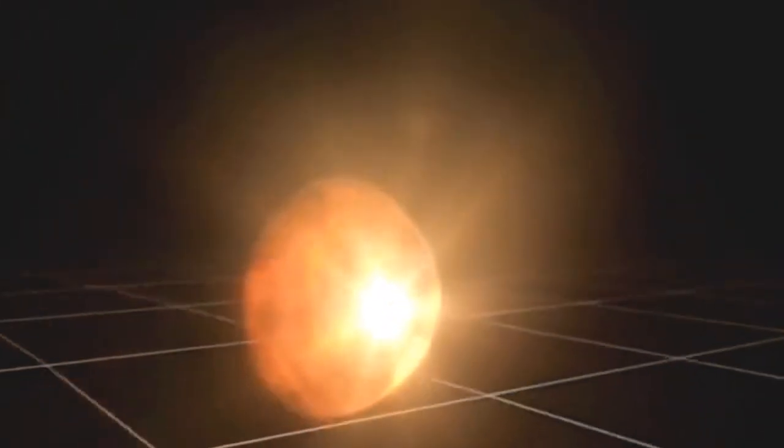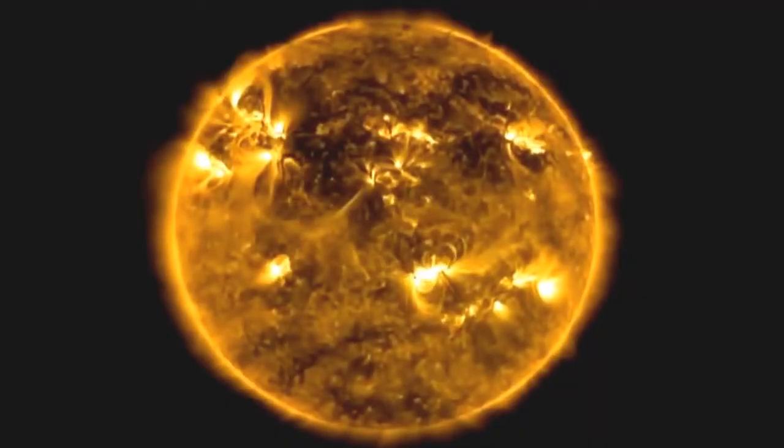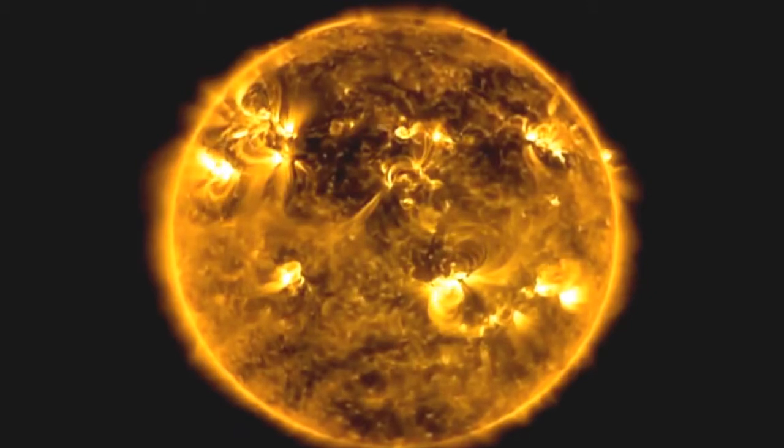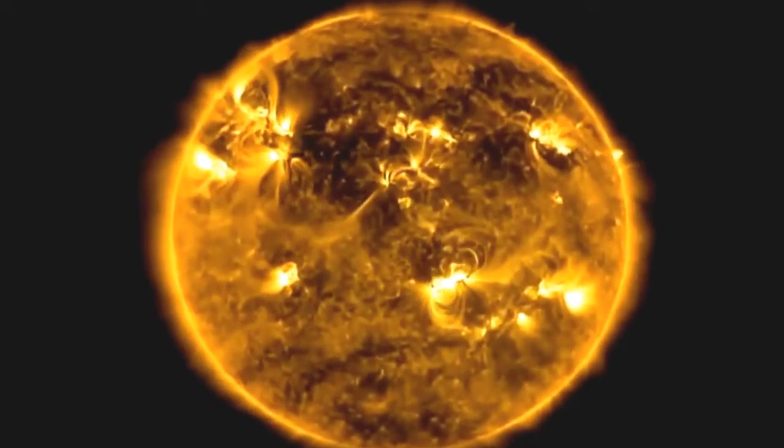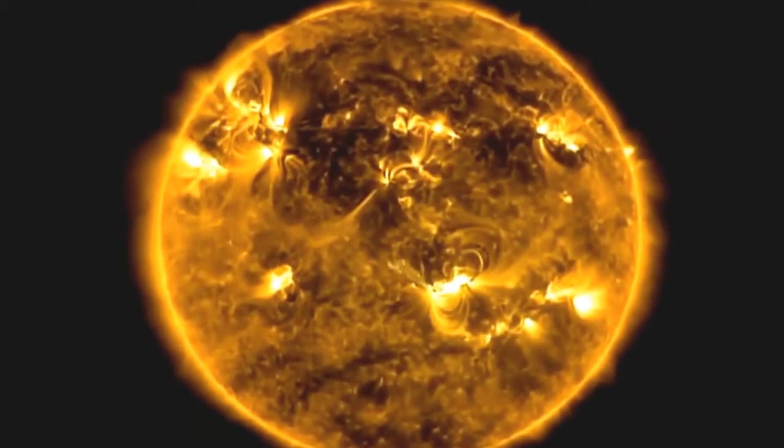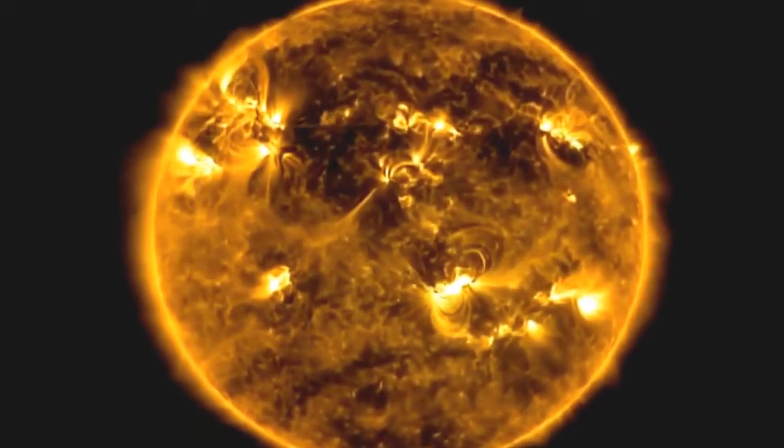A phenomenon called a coronal mass ejection, or CME. It's a wave of billions of tons of electrically charged particles seen here in this repeating image as it ripples away from the eye of the storm. Together, they could hit like a cosmic tsunami.